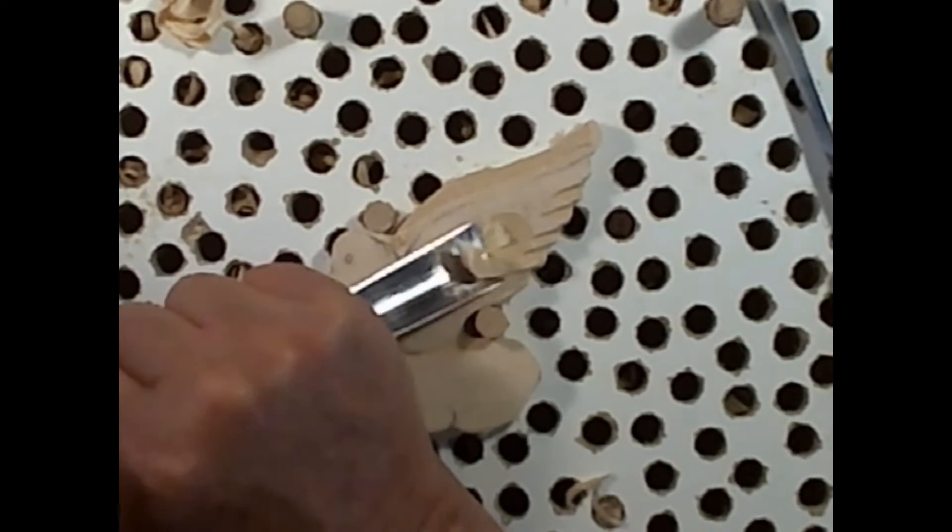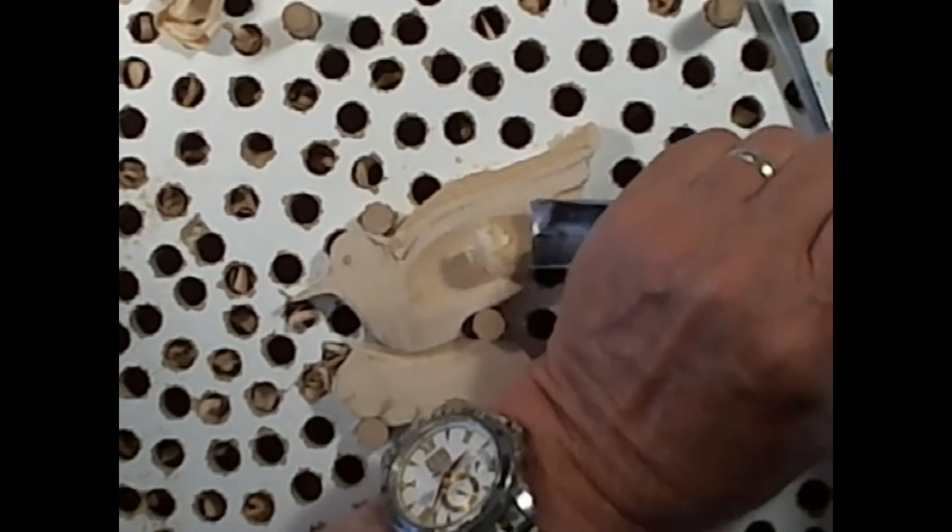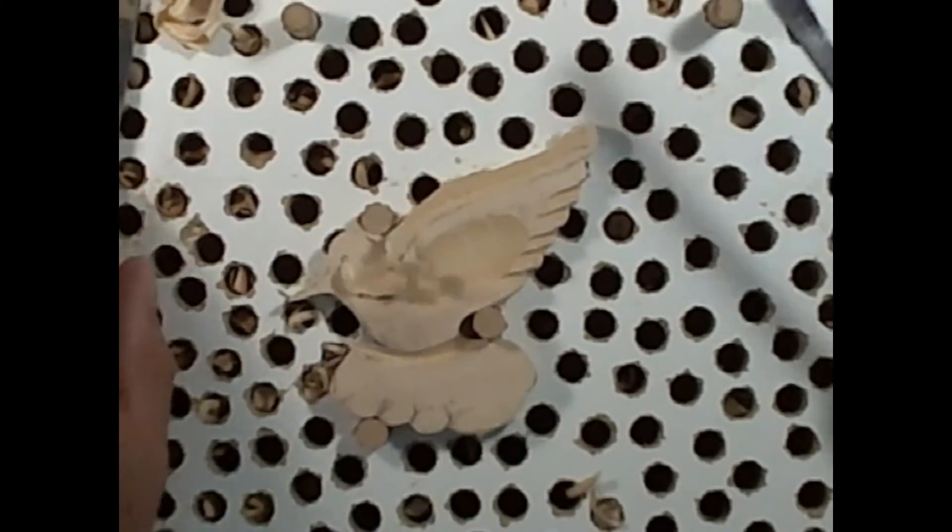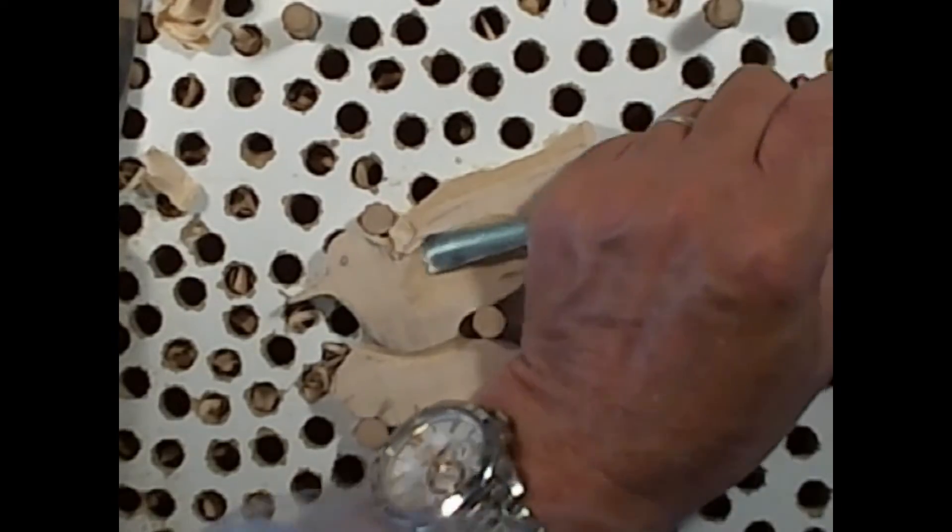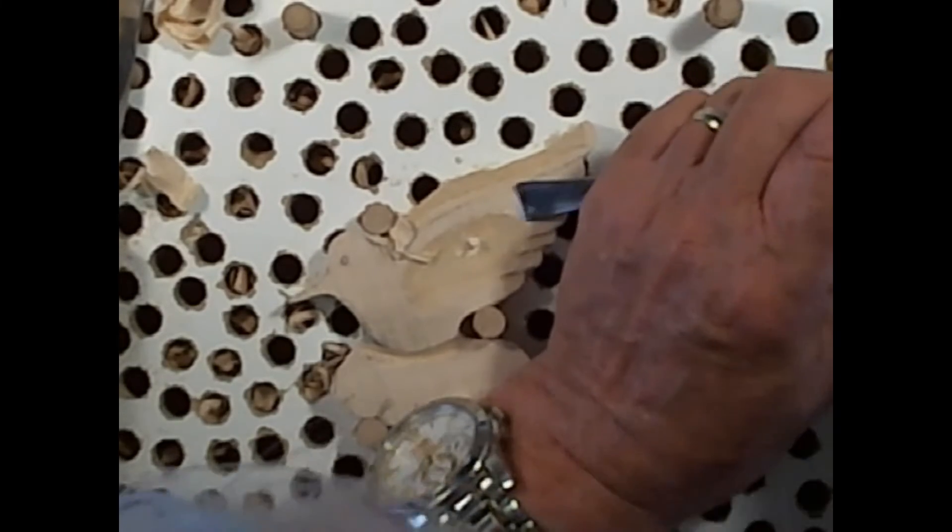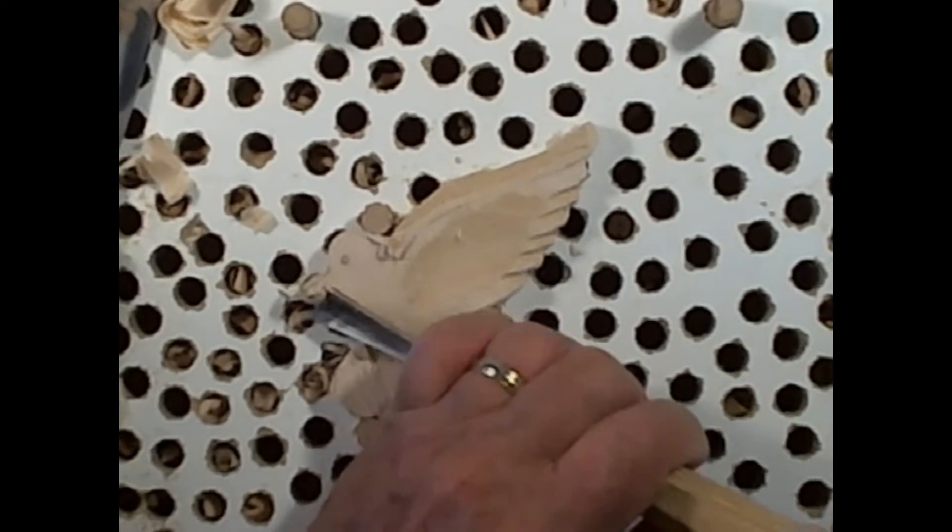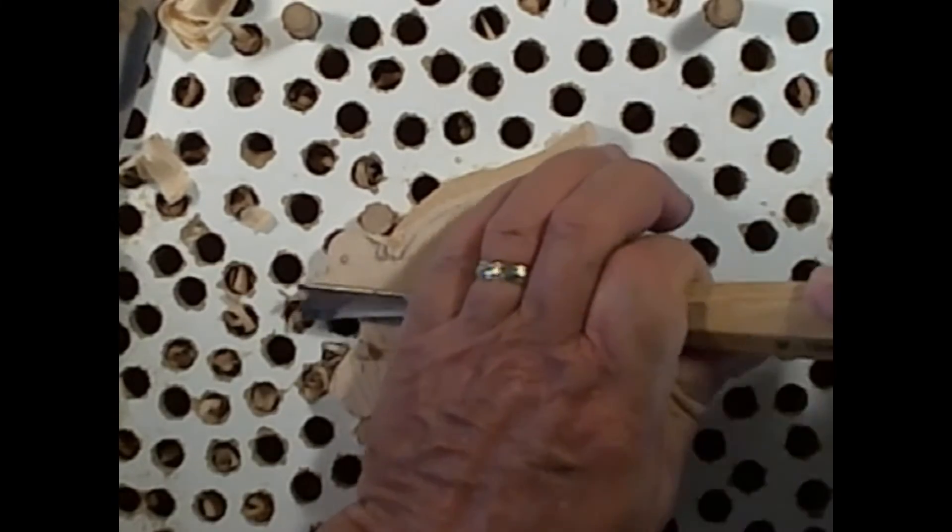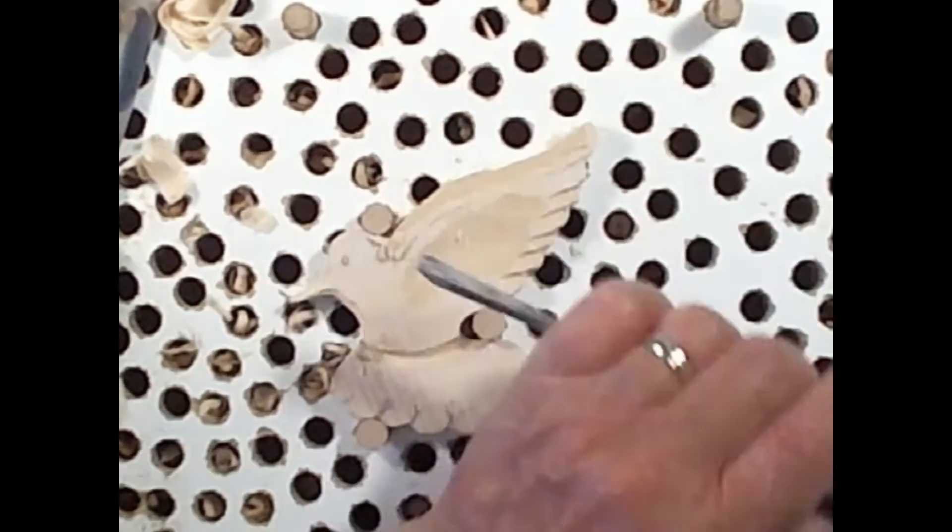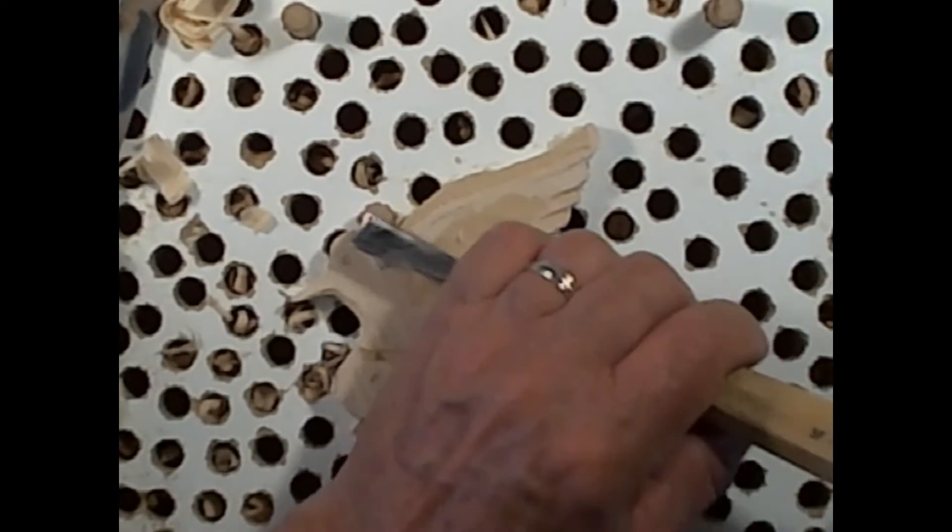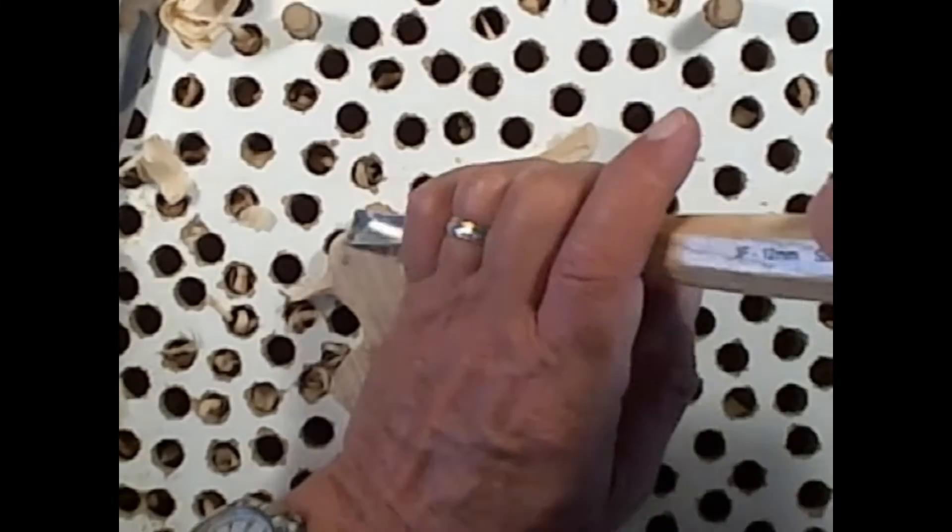So I'm digging this down. Now you can use the number three gouge the same way. Fix that same curve. Round this belly up a little bit. And come down and cut that beak a little bit, coming down like this. And then I'm going to roll the top of the head off.